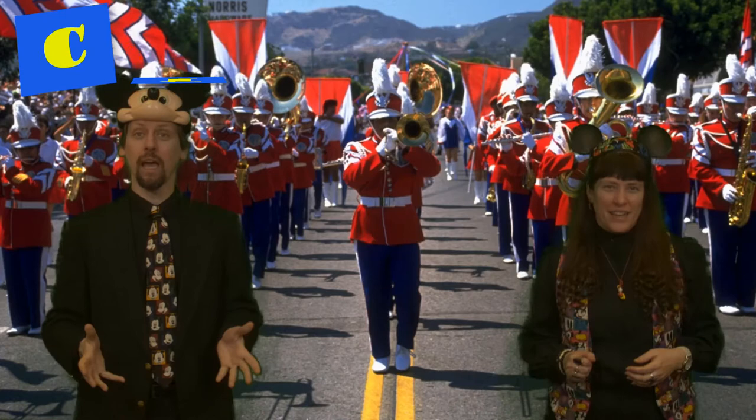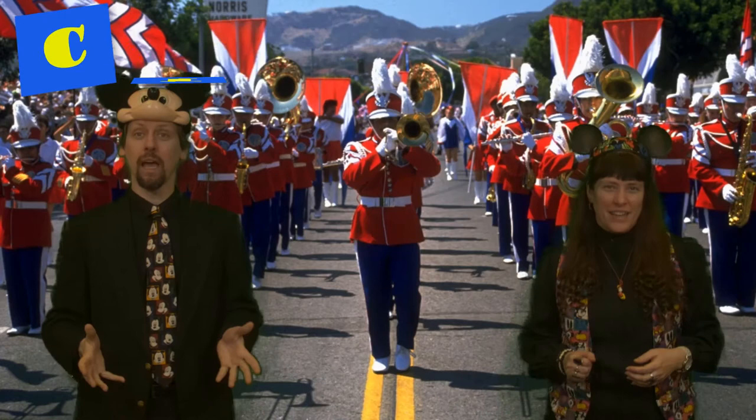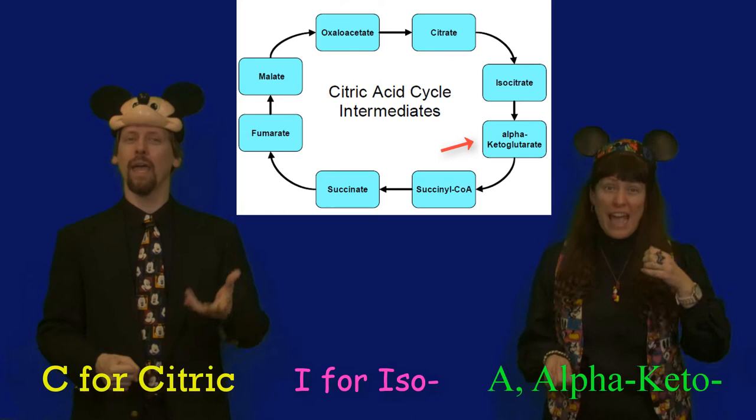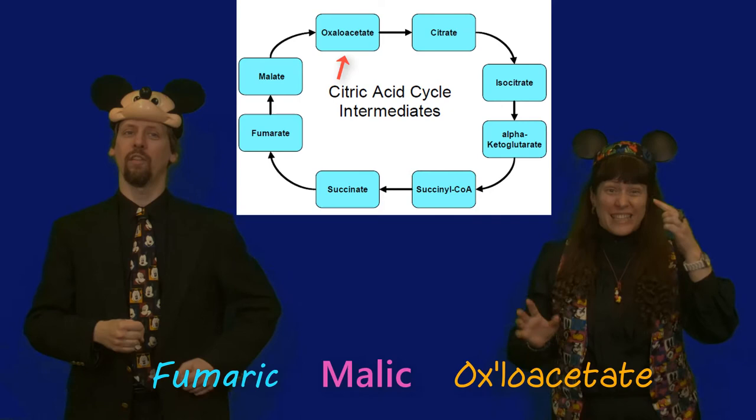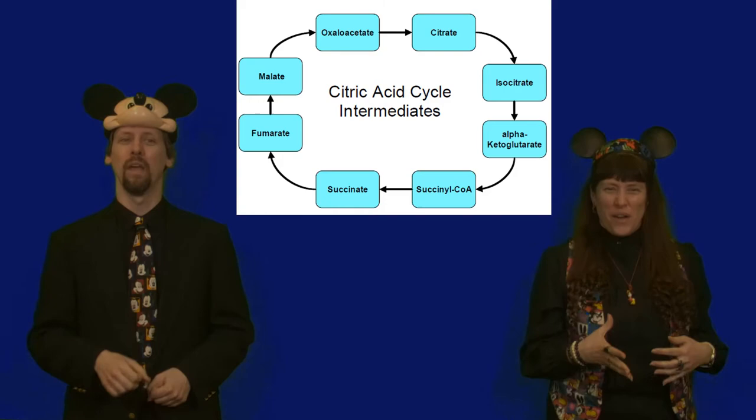Krebs cycle intermediates aren't so hard to know. C-I-A, A-K-G, S-S-F-M-O. C for citric, I for iso, O-A-L-A-K-E-T-O glutarate — ain't it great. S-S-F-M-O. Succinyl plus CoA, succinate, hip hooray. Fumaric, malic, oxaloacetate. Krebs cycle eight. Acetyl-CoA joins the chain to make the cycle go. C-I-A, A-K-G, S-S-F-M-O.